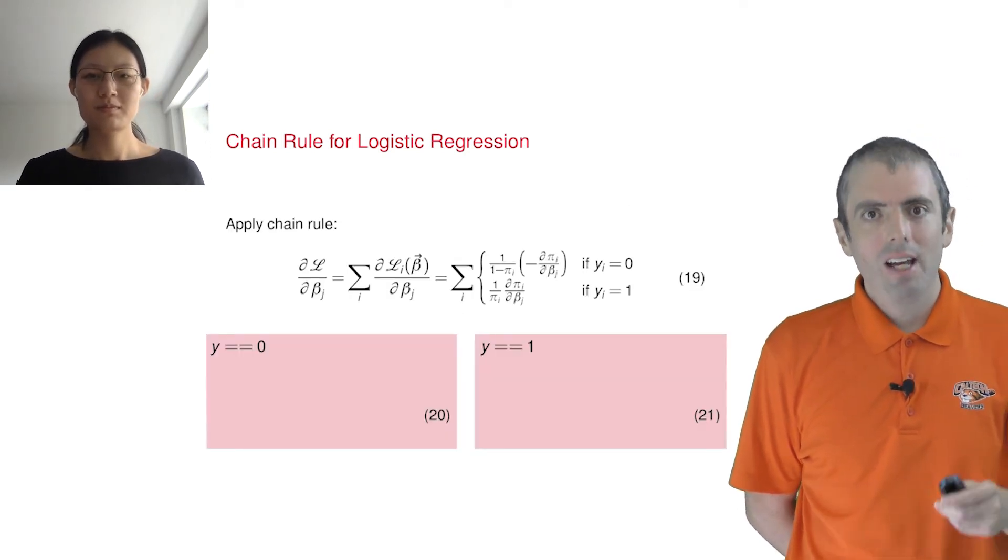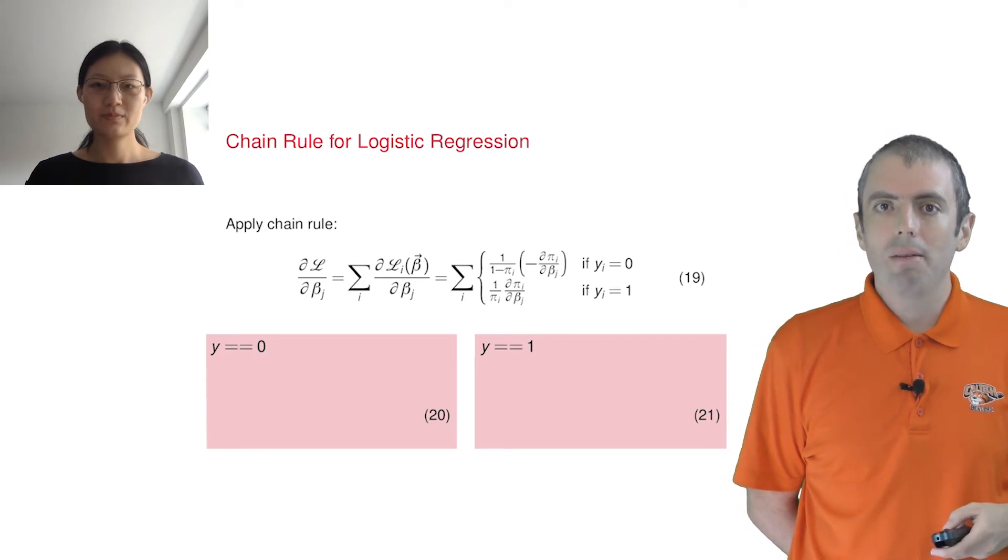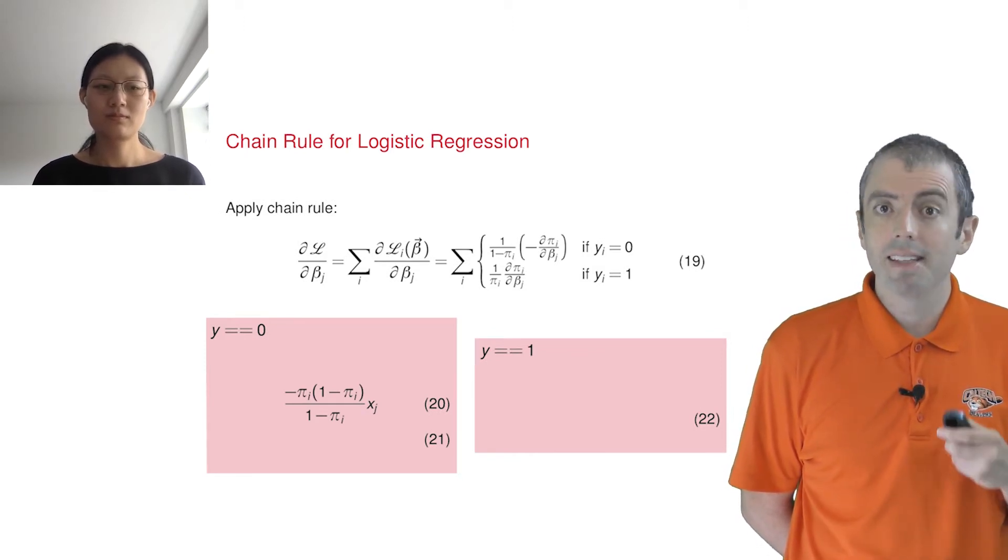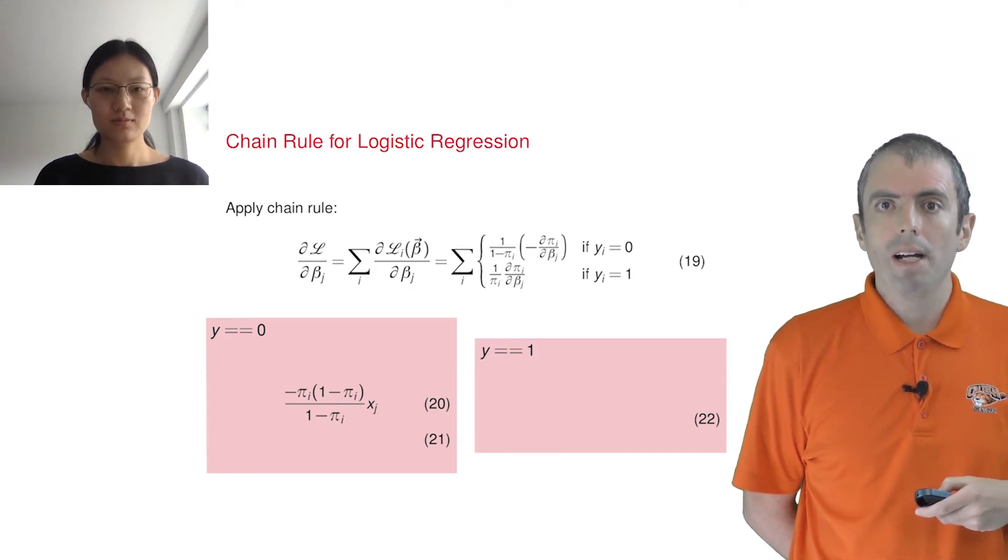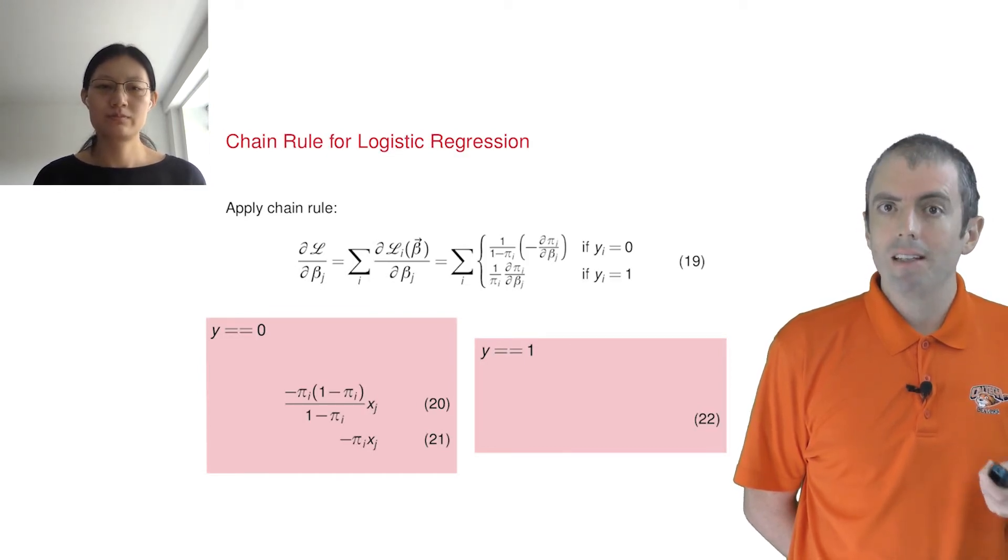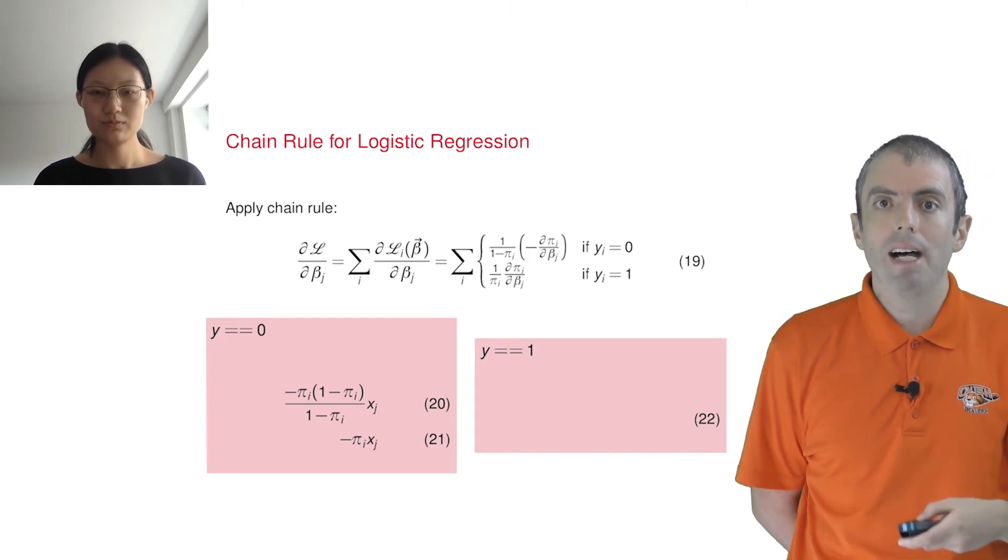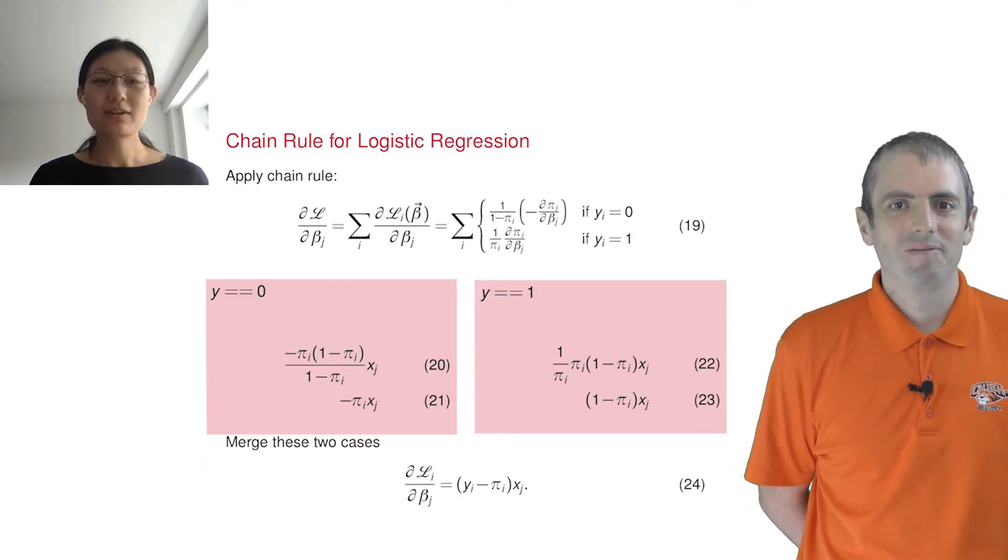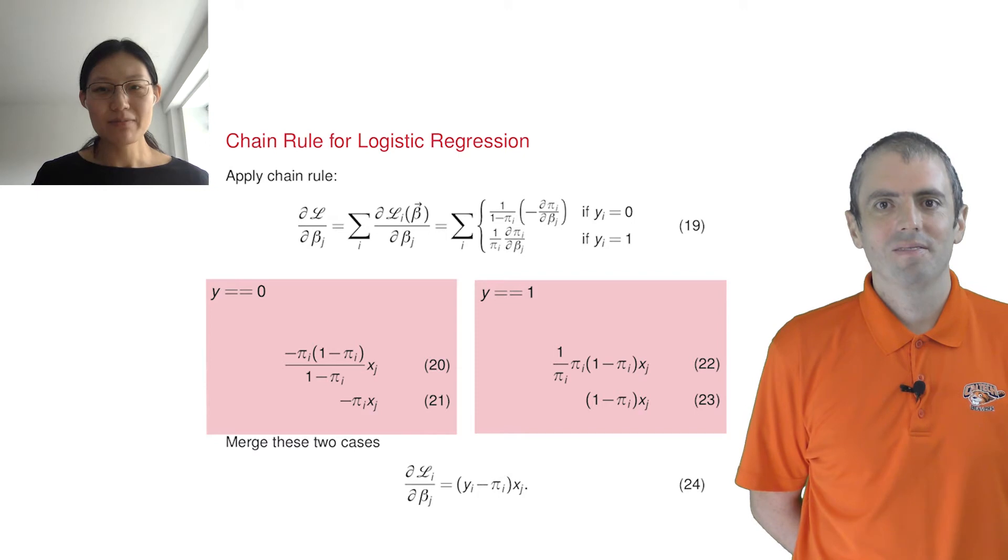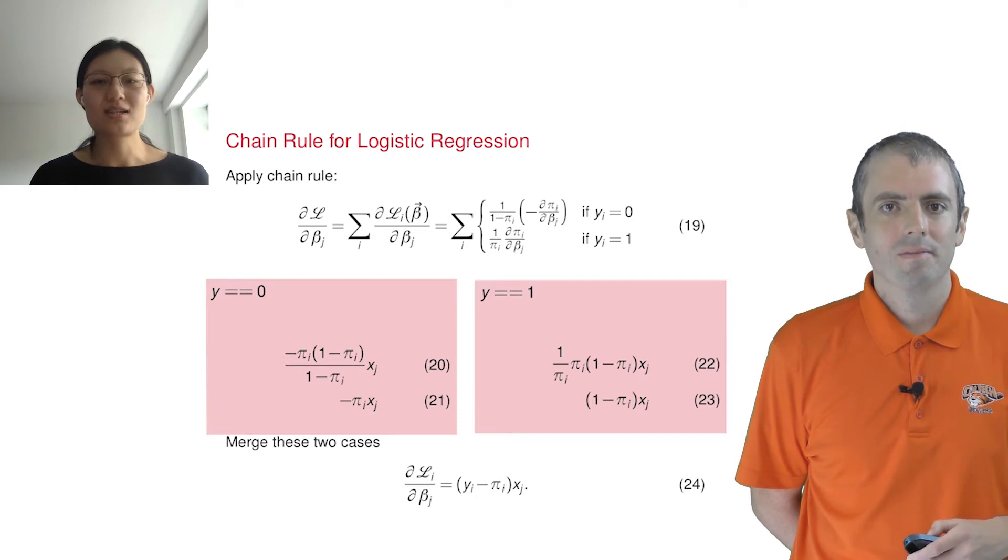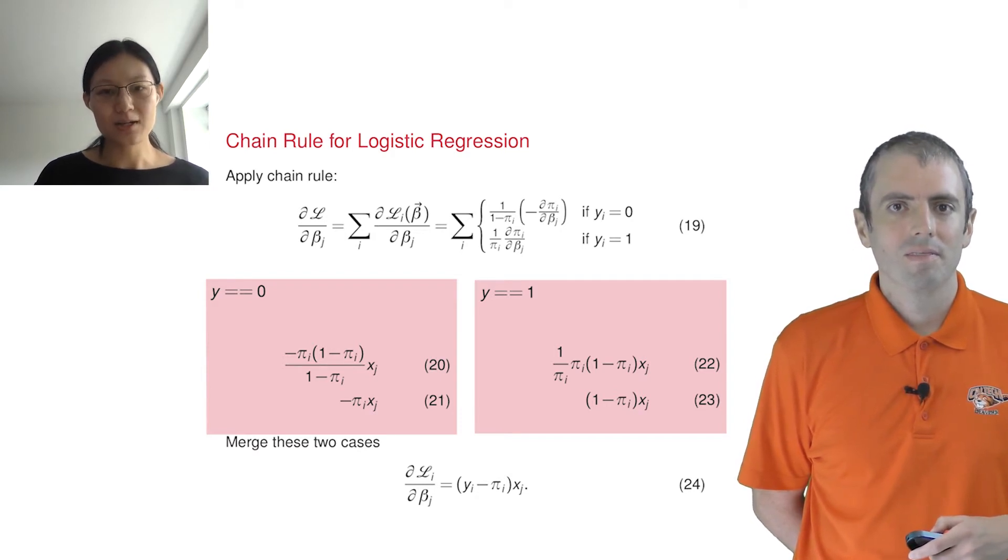So let's go through this. We have two cases, one for positive examples and one for negative examples. Let's do y equals zero first. The negative sign comes from the minus sign in front of pi inside the log. We get 1 over 1 minus pi i from the logarithm function, and that gets multiplied by the derivative of the logistic function, which cancels out the 1 minus pi i to give us negative pi i times xj. For the case of y equals 1, it's the same, except that the pi cancels out. We can merge the two cases together by writing the gradient as y minus pi i times xj.